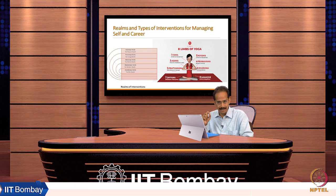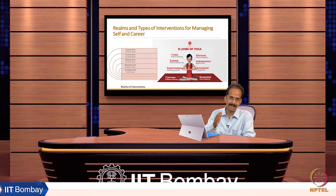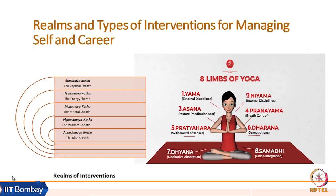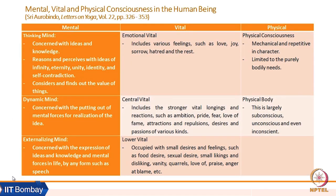We are going to look at interventions derived from the eight Angas of Ashtanga Yoga, also called Raj Yoga. These eight Angas were enumerated in the previous slide, and we are going to have a more detailed discussion. In modern times, an even more refined classification was given by Shri Aurobindo.